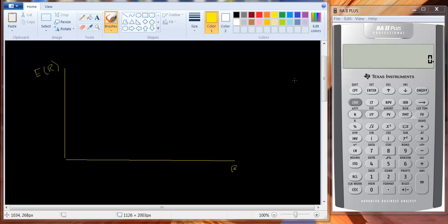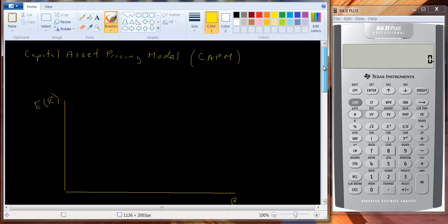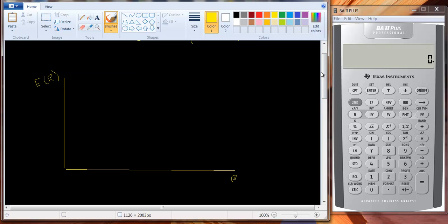We have a model, the Capital Asset Pricing Model. It's an equilibrium pricing model and it relates systematic risk to expected return. It's going to turn out to be a straight line relationship between risk and return. How do we get a couple of points on our line? This line is what we're going to call the security market line.